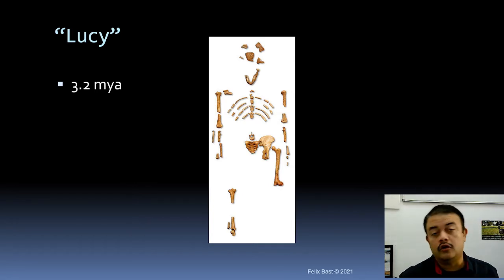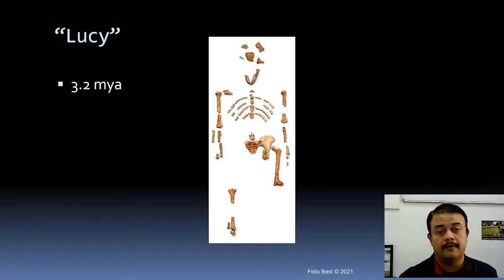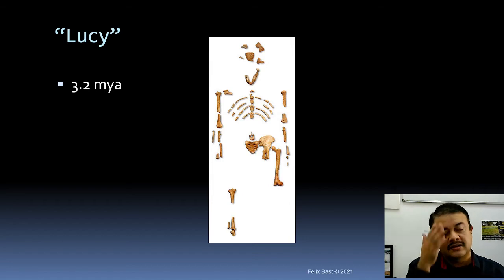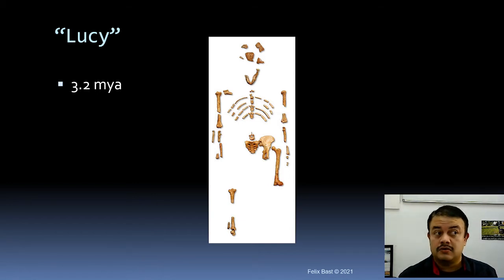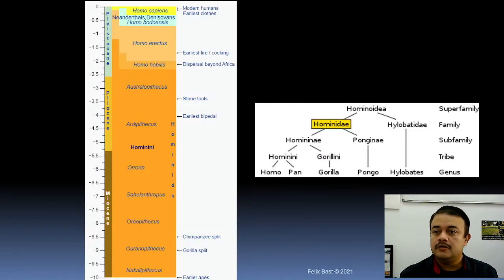If you look at human or hominid evolution, most of the famous fossils are found in Africa. That is why we think that all of human evolution — and hominid evolution more broadly — originated in Africa. Most of the species diversity in hominids can be found in Africa.